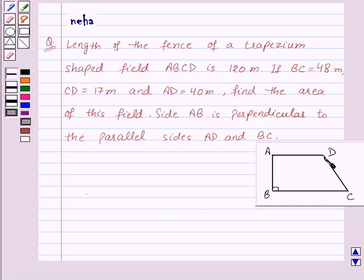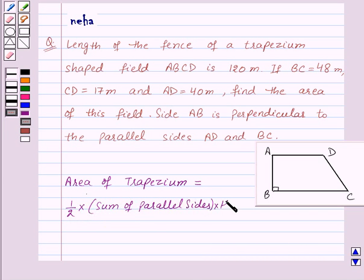Here is the figure of the field ABCD. Now before proceeding to the solution, let's recall the formula for area of a trapezium. Area of trapezium equals one-half times the sum of parallel sides times height. This is the key idea for this question.